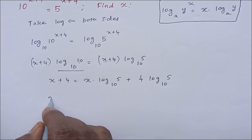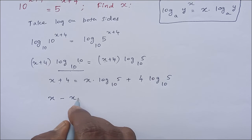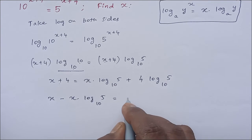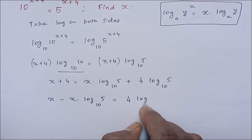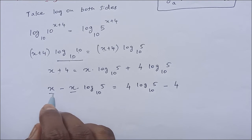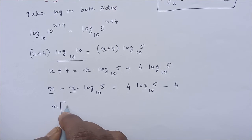4 log 5 to the base 10 minus 4. So x is common, so take that outside: 1 minus log 5 to the base 10